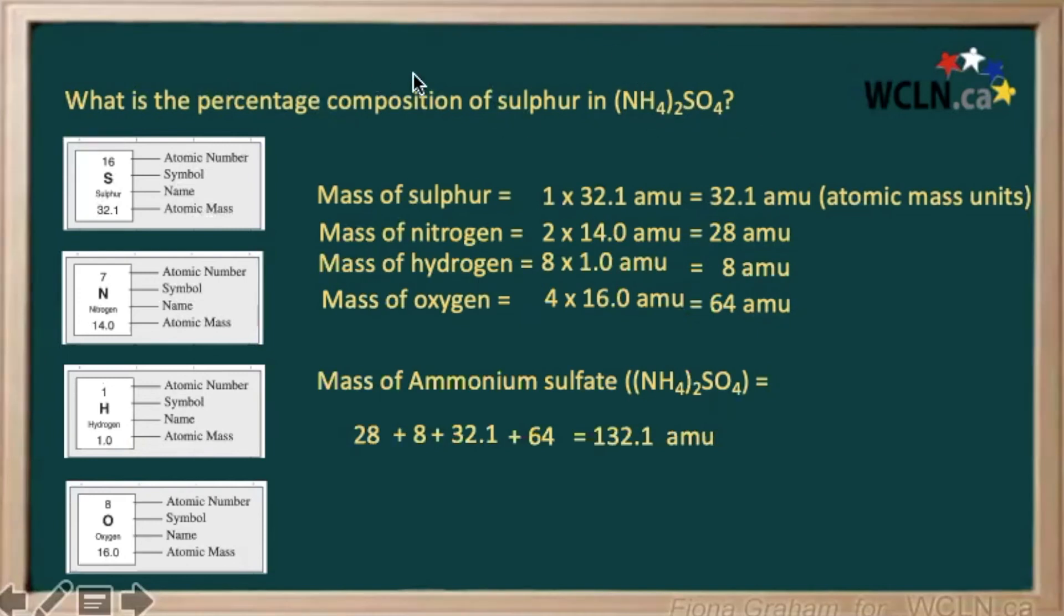We're going to compare the mass of the sulfur to the whole mass of our ammonium sulfate. Finding this ratio, we want it as a percentage, so we would have to multiply this by 100, giving us 24.3%. That is the percentage, so almost a quarter of our whole compound's weight or its mass is coming from our sulfur.